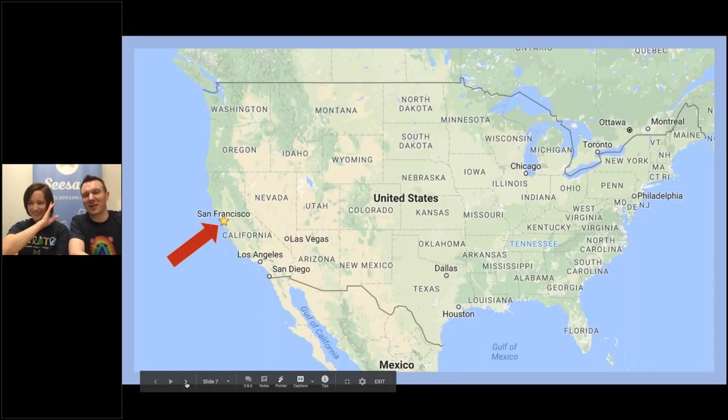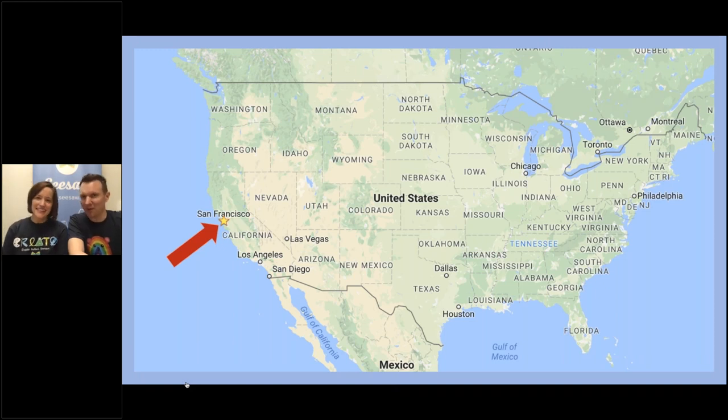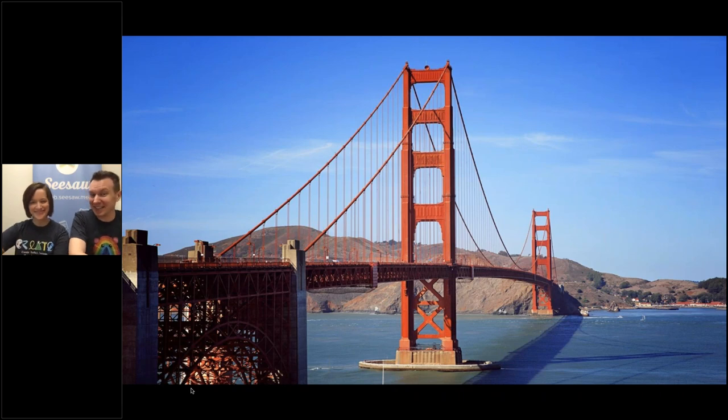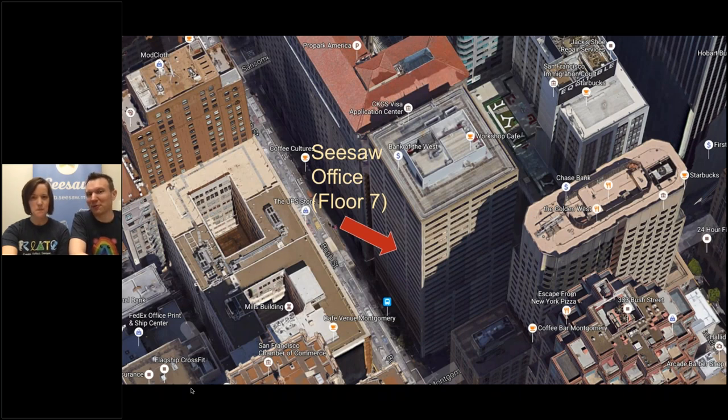Now, I realize you might not all know where California is. Maybe you have a map like this up in your classroom somewhere where that big red arrow is, is where San Francisco is, which is where we are right now. This is probably one of the things you might recognize if you've ever been to San Francisco or seen it in a movie. But we work in downtown in a tall office building and we're on floor seven. That's where everyone who works at Seesaw in San Francisco is.